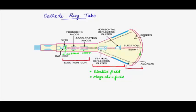The second way to deflect electrons is using a magnetic field. Instead of applying a potential difference, we use a shoe magnet or strong electromagnet to provide a magnetic field. As we discussed, a moving charge in a magnetic field experiences a force known as the Lorentz force. By fine-tuning the direction of the magnetic field, we can control which way the Lorentz force is applied, thereby deflecting the electron wherever we want on the screen.